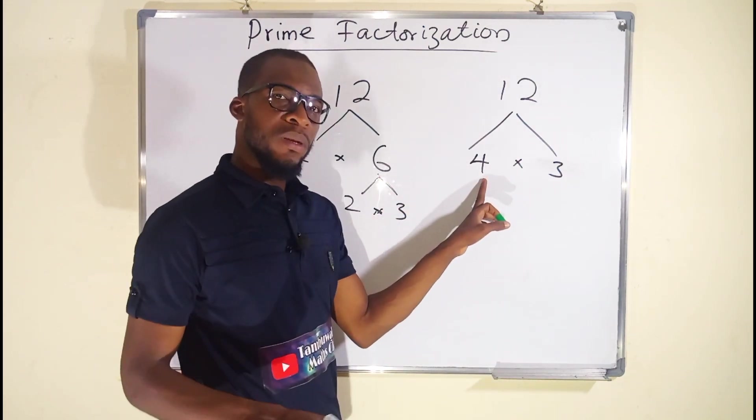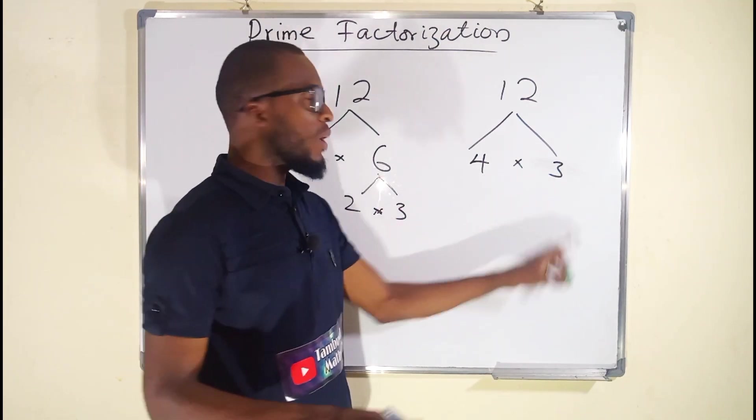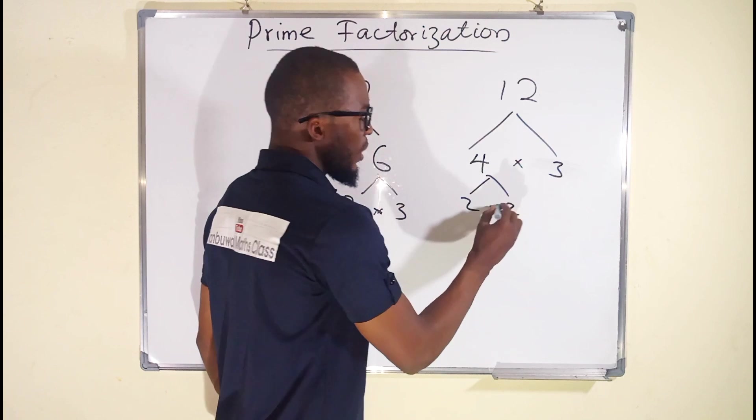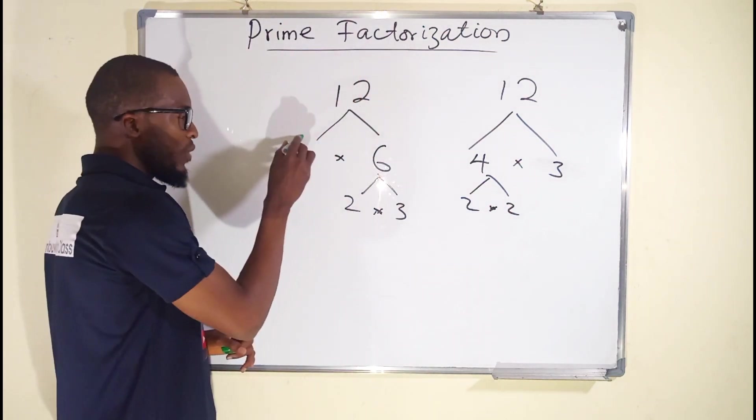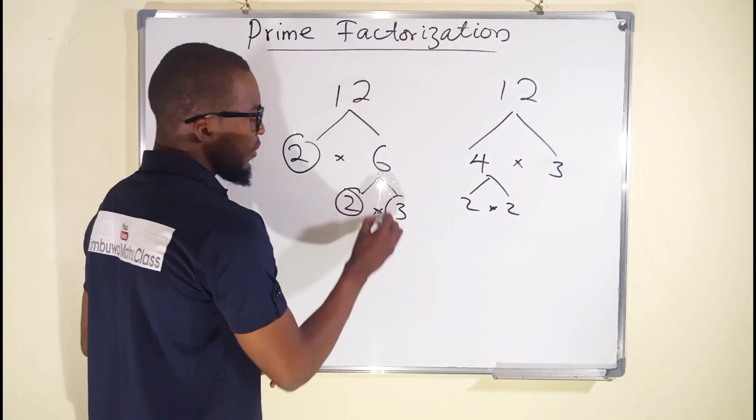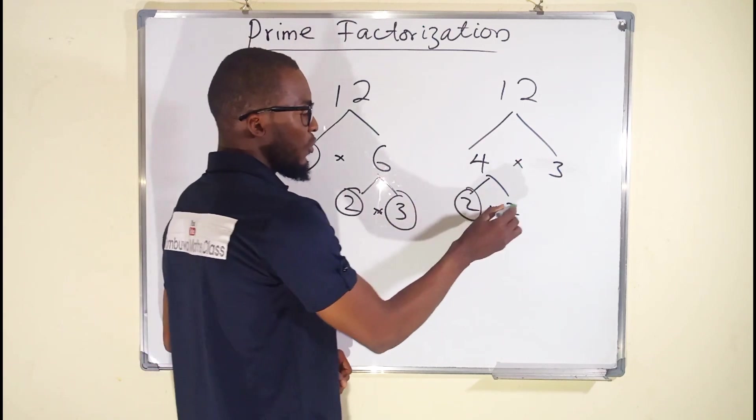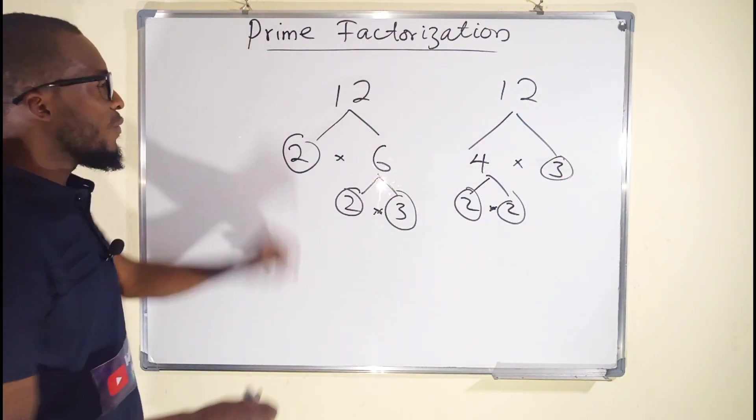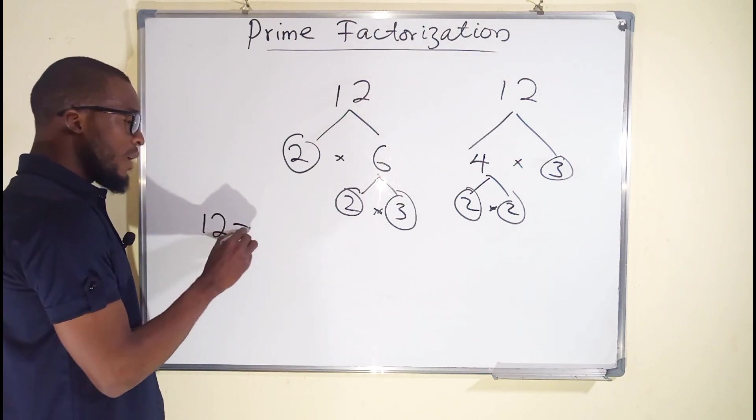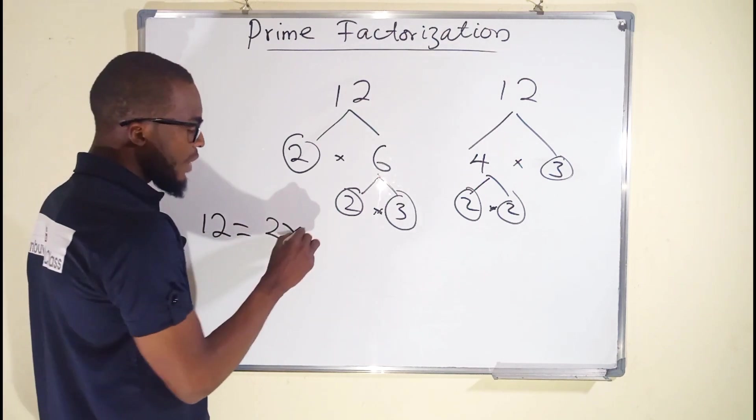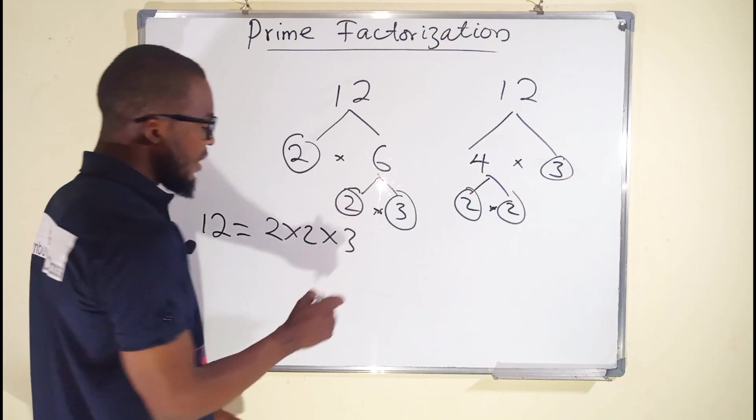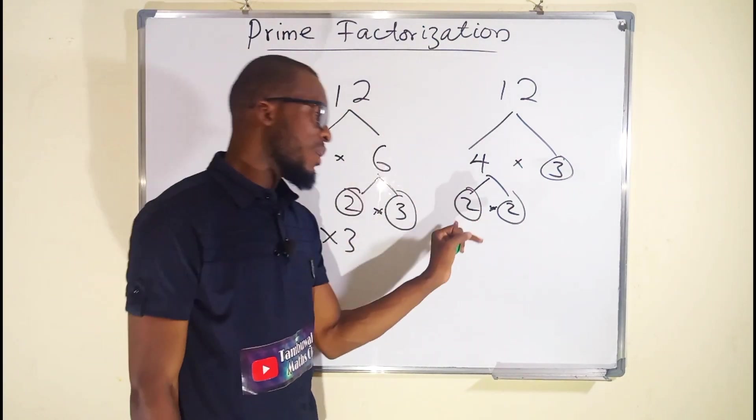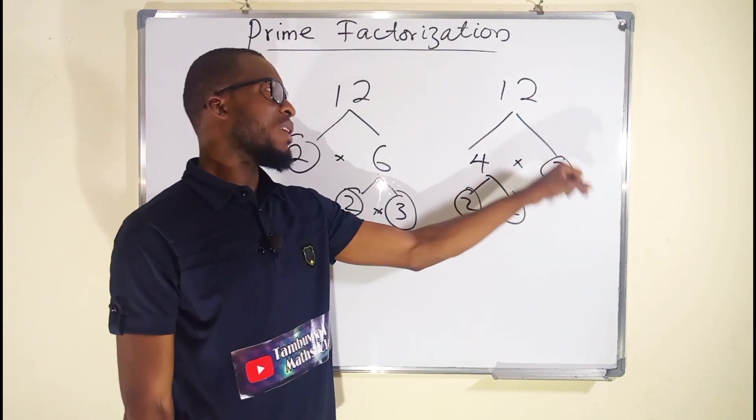4 is not a prime but 3 is a prime. We can split this into 2 times 2. 2 is a prime number so we leave it that way but 6 is not. Again, we can split 6 into 2 and 3. So in either way, we have 2, 2, 3. Therefore, the prime factorization of the number 12 is equal to 2 multiplied by 2 multiplied by 3, because 2 times 2 is 4 and 4 times 3 is 12.